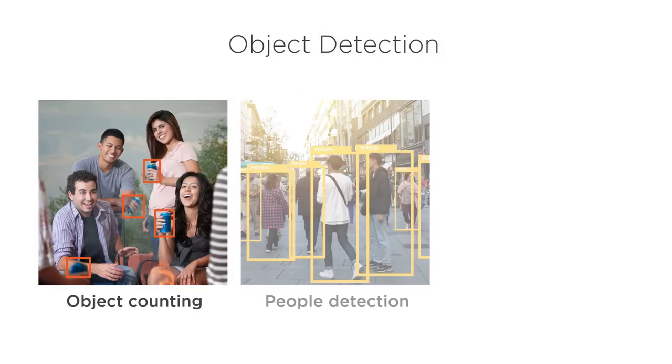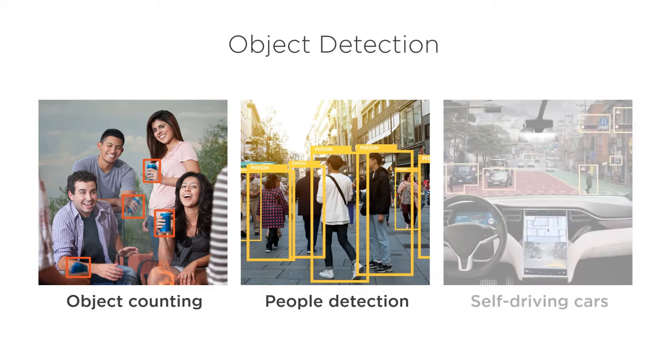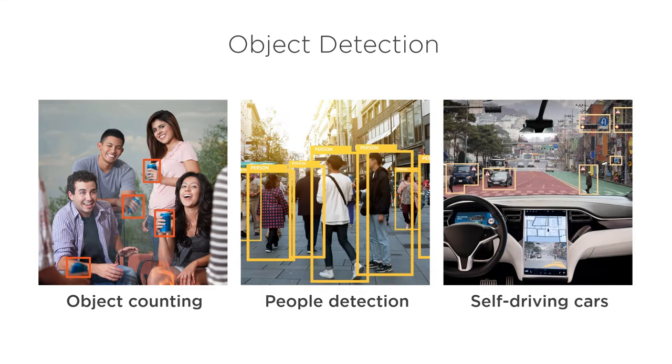Object detection is useful anytime you have images with multiple objects that need to be located. For example, counting the number of objects in a photo, detecting people in surveillance videos, or detecting various obstacles in self-driving cars.